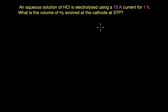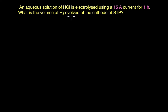In this video we are going to solve a few problems on Faraday's laws of electrolysis. Our first question says: an aqueous solution of HCl is electrolyzed using a 15 ampere current for one hour. What is the volume of hydrogen gas evolved at the cathode at STP?